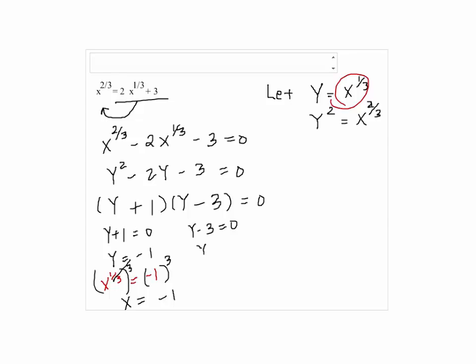Now, y minus 3 equals 0 so y equals 3 and again, y was x to the one-third. So, that is 3.